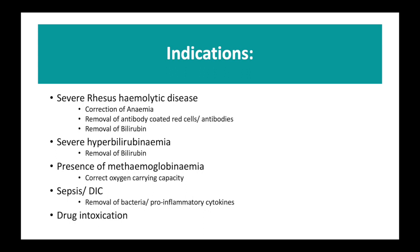You can also do an exchange transfusion for severe hyperbilirubinemia for any cause, in which case you're just removing bilirubin to try and protect the brain. The exchange can also be done for severe methemoglobinemia, to correct the oxygen carrying capacity. In some places exchange is done in babies with severe sepsis or DIC to remove bacteria and pro-inflammatory cytokines from the circulation, though that's not done often in the West. We can also use exchange for drug intoxication where we want to remove anything from the plasma that's potentially causing the baby harm.